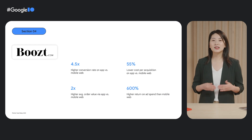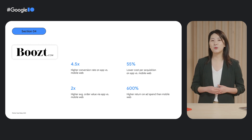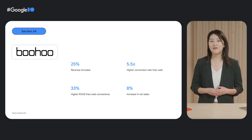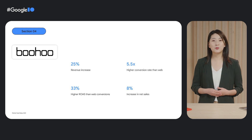I want to share some stories about how companies have transformed their business with deep links. Boost, the leading Nordic online department store, implemented deep links and saw their app achieve a 4.5 times higher conversion rate compared with mobile web, and average order value two times higher than mobile web. Boohoo.com, a leading British online fashion retailer, after implementing deep links, their mobile app has a 5.5 times higher conversion rate than web, resulting in a 25% revenue increase. Deep links create a better user experience and engagement with your app.